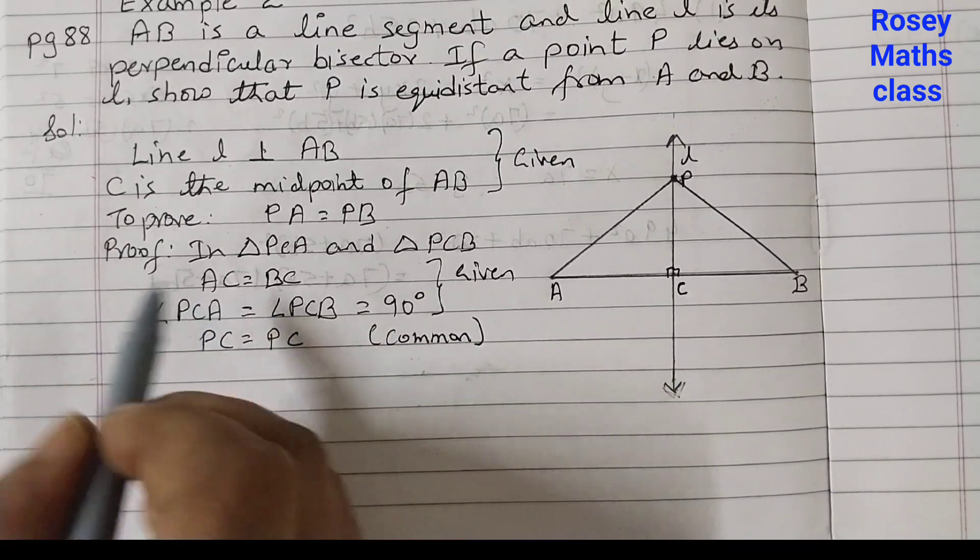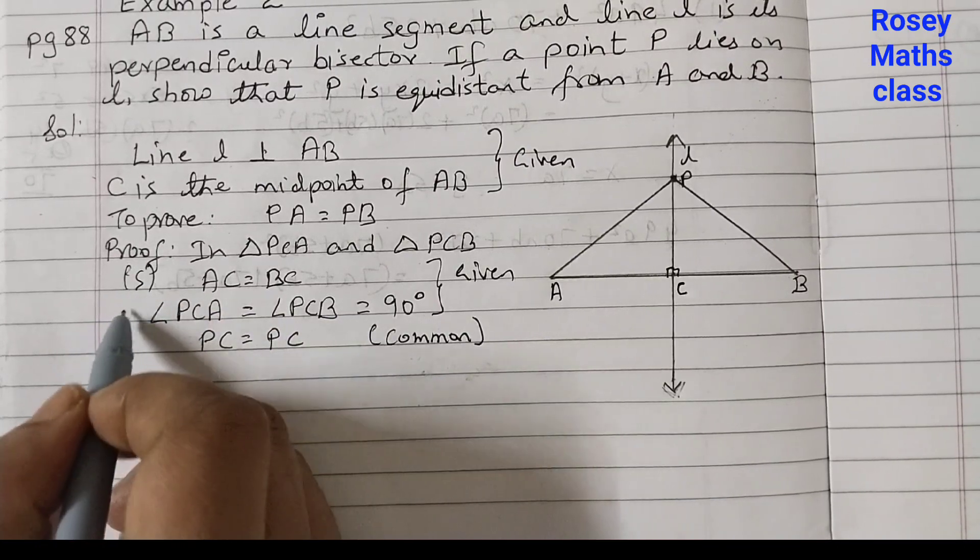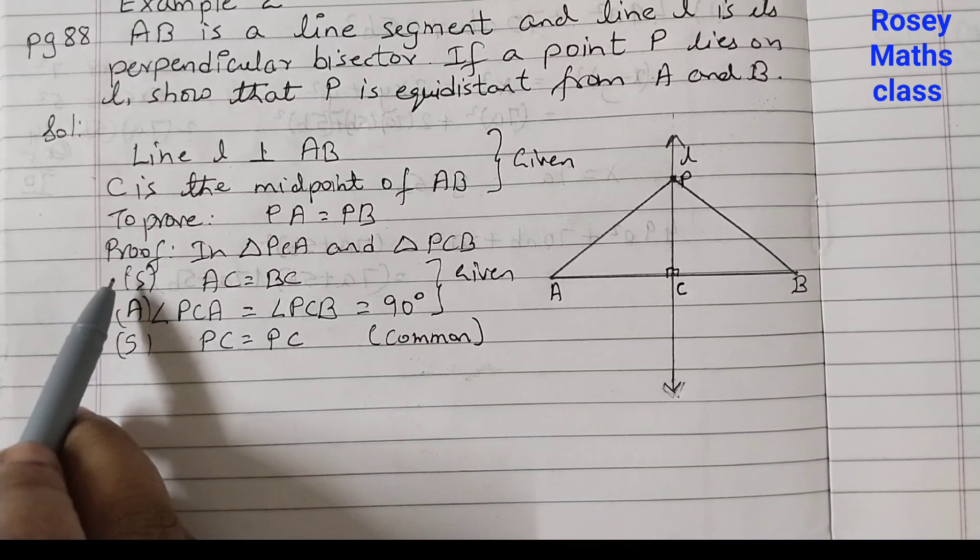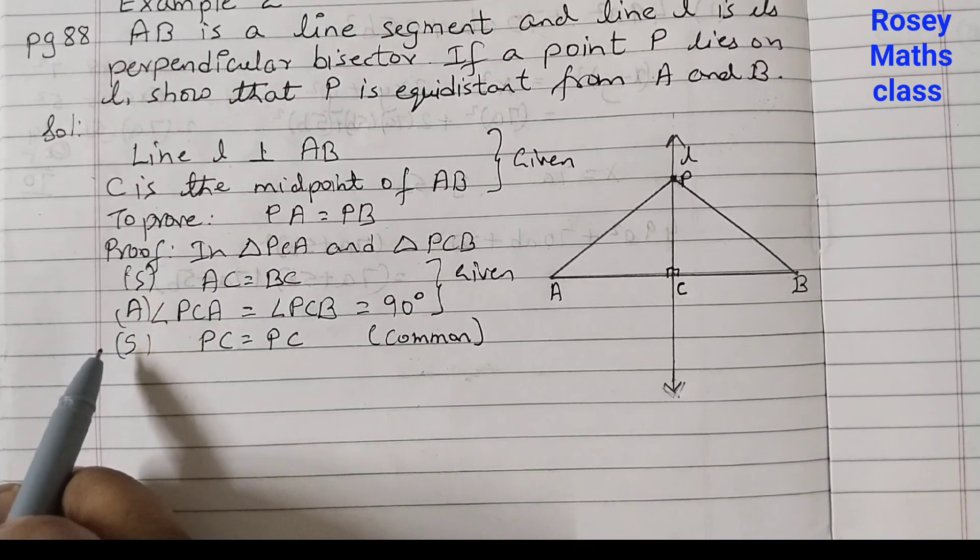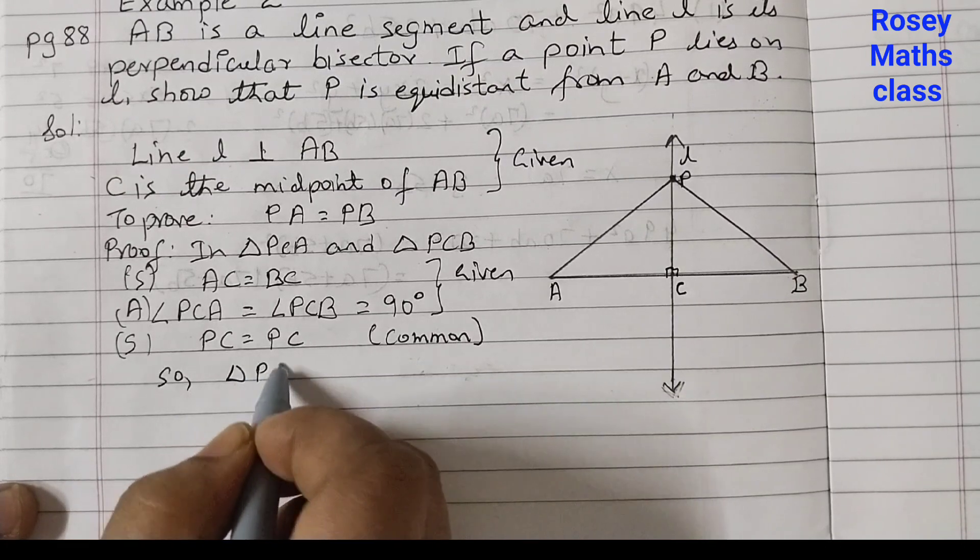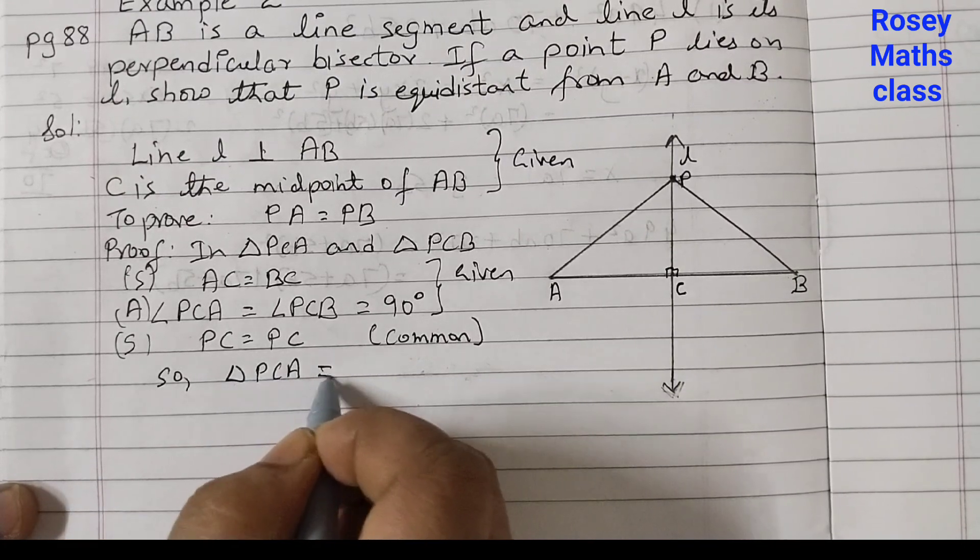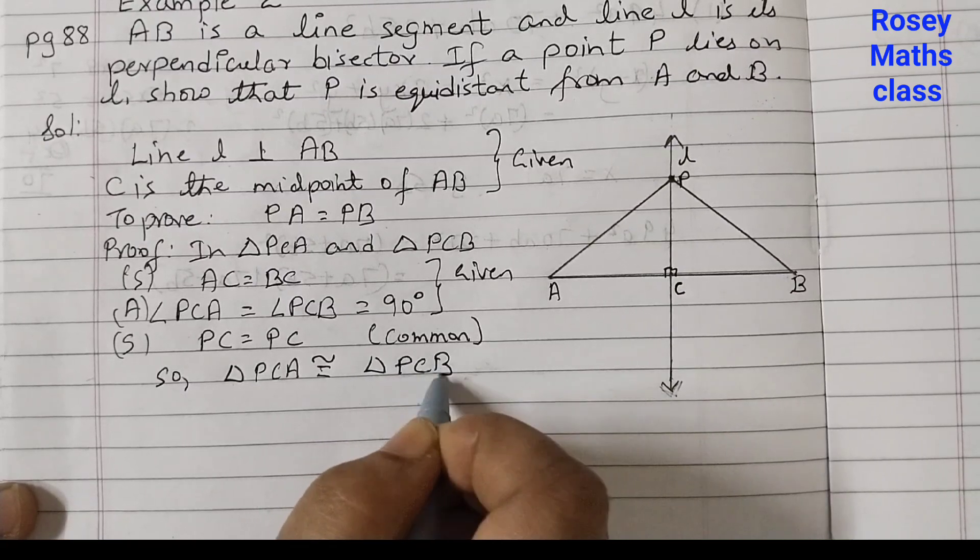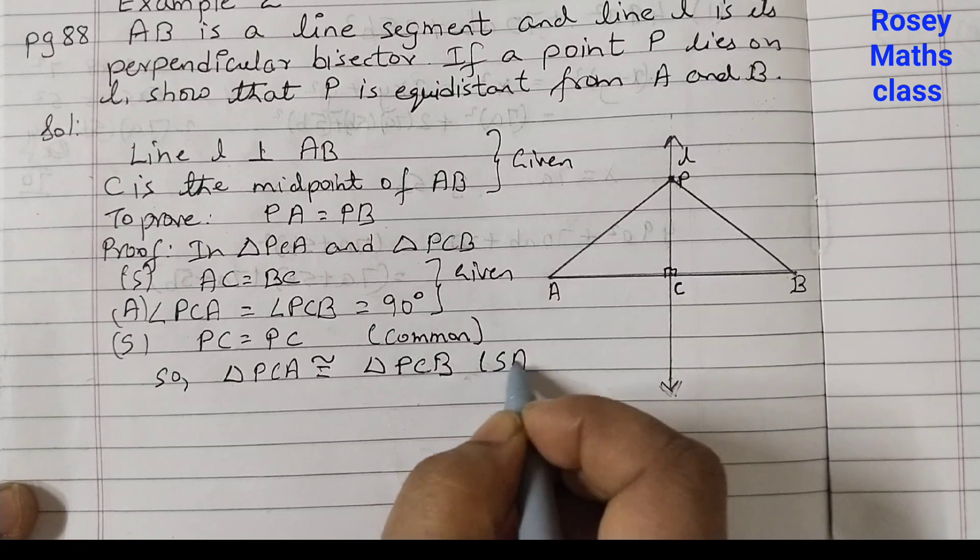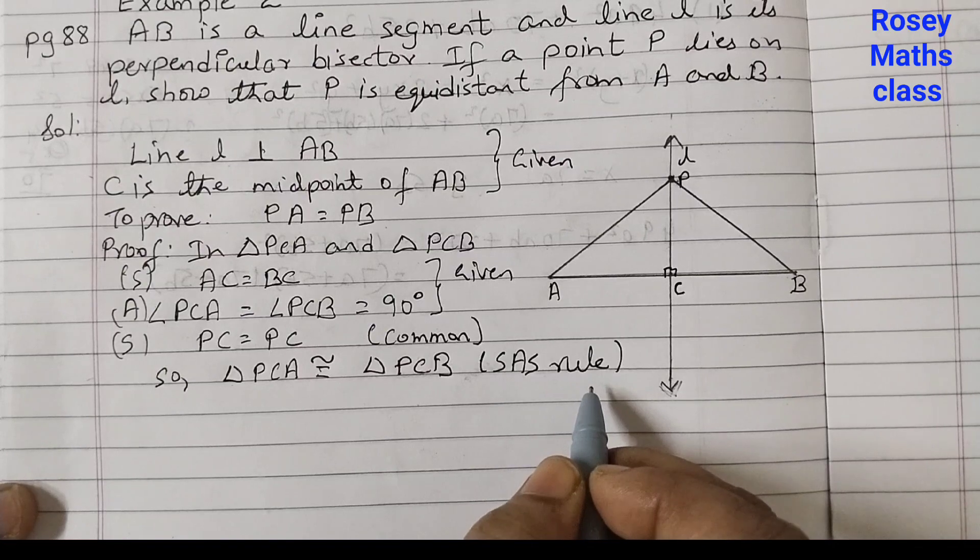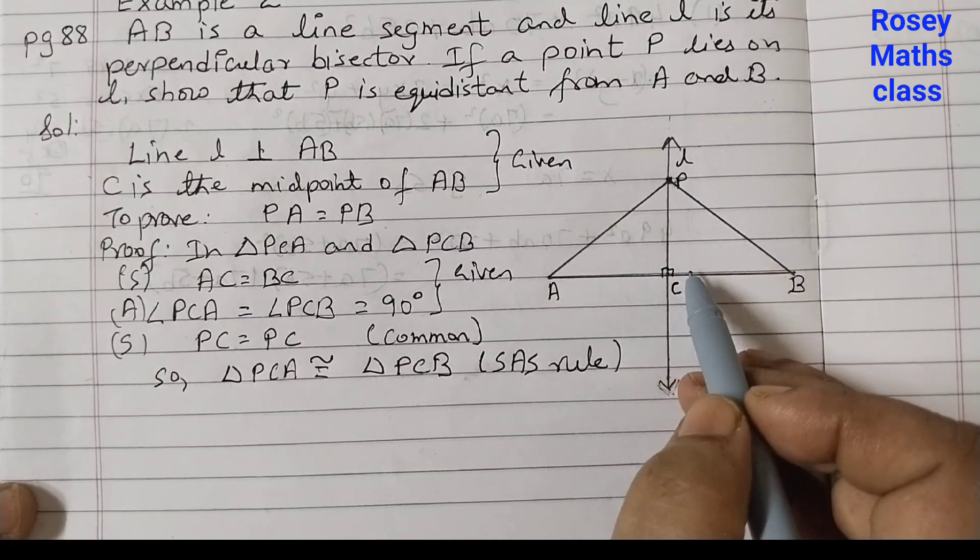So now AC is the side, angle, PC is the side. So according to SAS rule triangle PCA is congruent to triangle PCB and we will write here the rule SAS rule side angle side rule. So these two triangles are congruent.